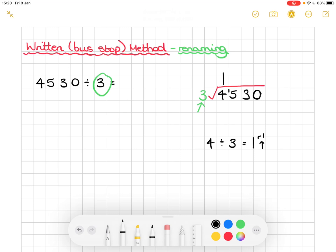So moving into the hundreds column, we are now going to do 15 divided by 3, and that makes 5. This 5 now goes on top of our bus stop method. There's no remainder here, so we don't need to put any renaming in, and we can just simply move on to our tens column.